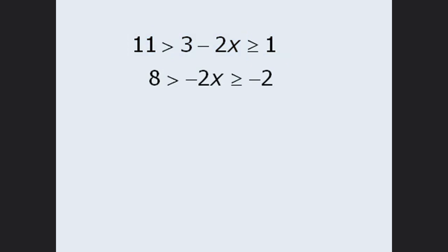From here, we can isolate x by dividing all 3 parts by negative 2. So 8 divided by negative 2 is negative 4. Since we are dividing all 3 parts by a negative number, we must reverse the direction of the inequality. Negative 2x divided by negative 2 equals x — we reverse that inequality as well. And finally, negative 2 divided by negative 2 equals 1.